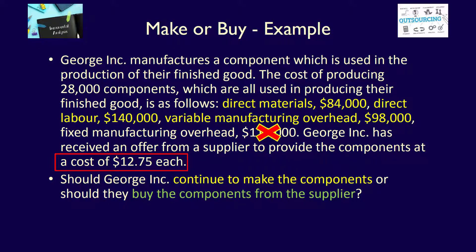Finally, the $12.75 per unit to buy the component from an outside supplier — is it a relevant cost? If the component is made in-house, these costs will be zero because we don't buy any components. If the component is purchased from an outside supplier, the buy option, it will cost the company $12.75 each. This cost changes between alternatives and it's a future cost, so this cost is relevant and we have to include it in our analysis of the buy option. We also need the 28,000 component quantity for our calculations, so this information is relevant.